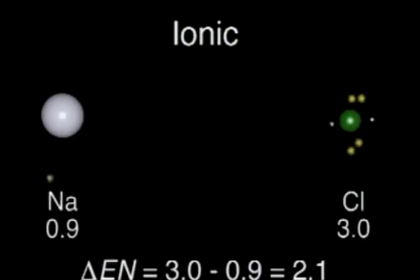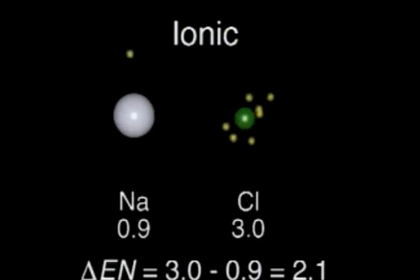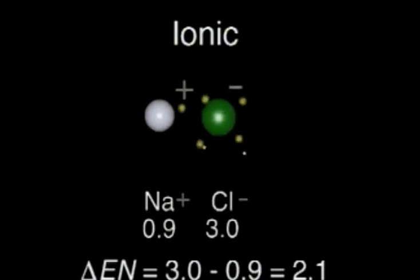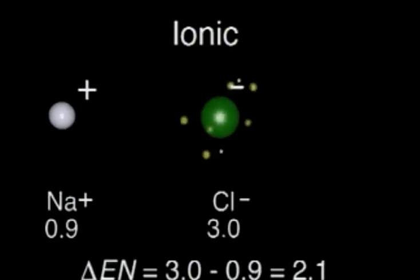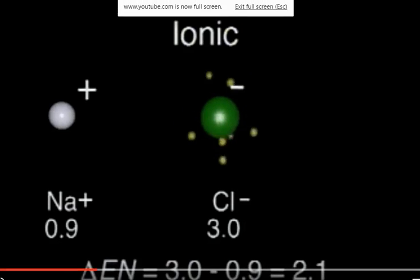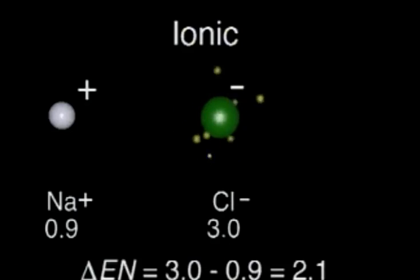When sodium and chlorine react, the chlorine atom removes sodium's valence electron and becomes a chloride ion. The less electronegative sodium atom cannot compete for electrons and becomes a sodium ion. The attraction between the ions is an ionic bond.